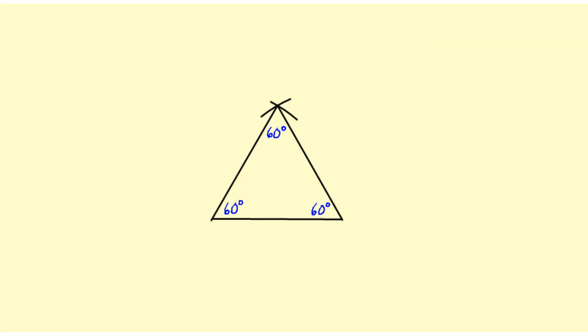That means if it's an equilateral triangle, which means all three sides are the same, all three angles are the same as well. And if you have three angles that add up to 180 and they're all the same, then they must each be 60 degrees, which means if we're going to construct a 60 degree angle, all we have to do is construct an equilateral triangle.